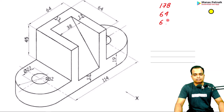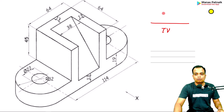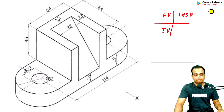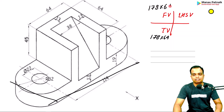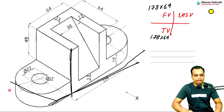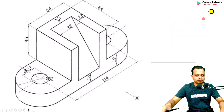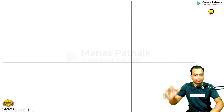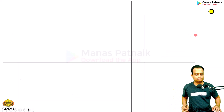Summary of dimensions: length 178, height 64, width 64. The first step is to create three rectangles. In the top view: a rectangle 178 by 64. In the front view: a rectangle 178 by 64. In the left-hand side view: a rectangle 64 by 64. Please take a screenshot. Here are all three rectangles drawn in one go — 178×64, 178×64, and 64×64 for the side view.